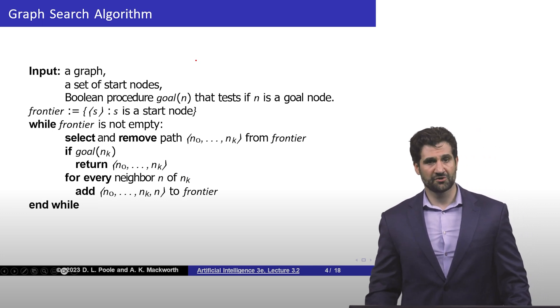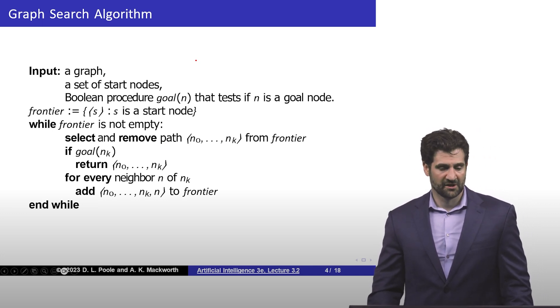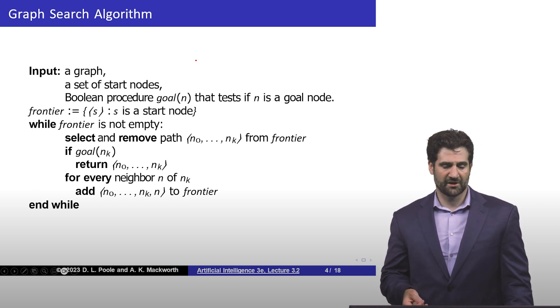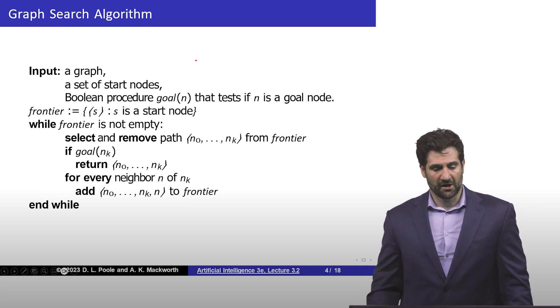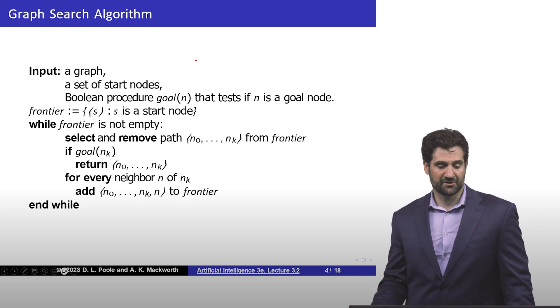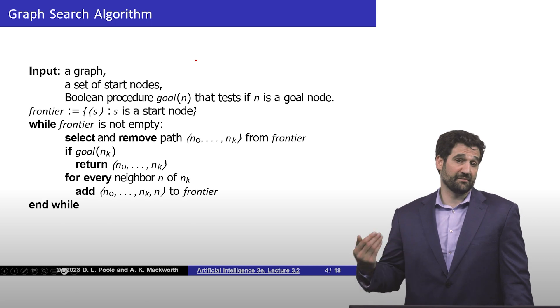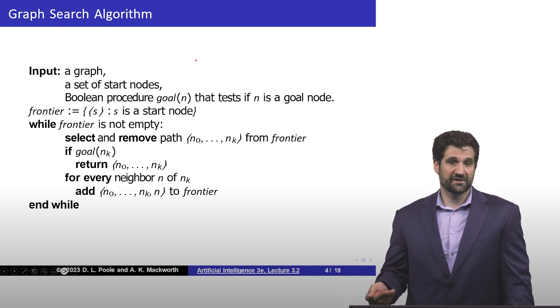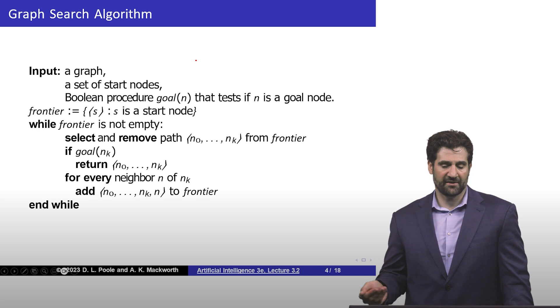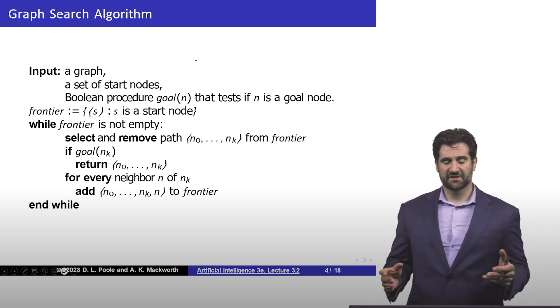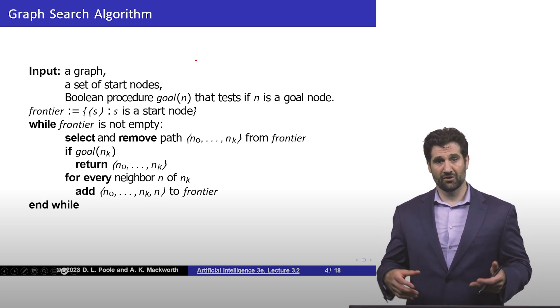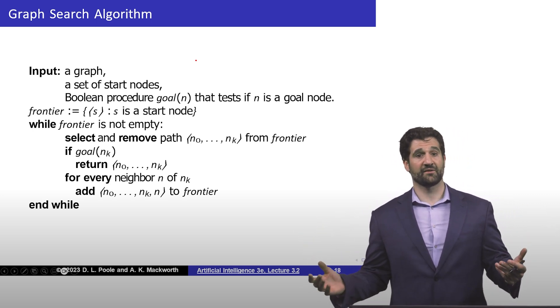To show some pseudocode for this, very simple. We start with the set of frontier nodes, which initially are just going to be the neighbors of the initial start nodes that we have. While the frontier is not empty, meaning that we have more stuff to explore, we're going to select and remove a path from the frontier. If the last node of that path happens to be a goal, then we return that path and we're done.